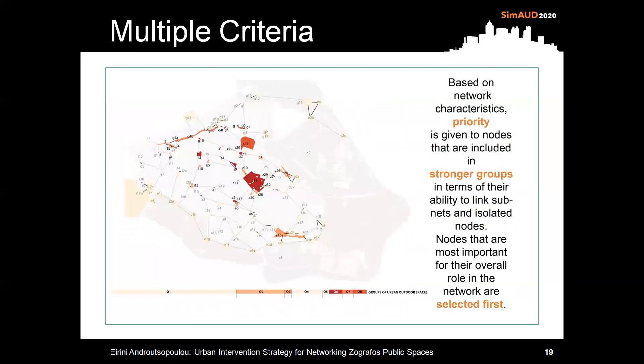In order to set up a network of public spaces, priority is given to nodes that are included in stronger groups in terms of their ability to link subnets and isolated nodes. Therefore, the nodes that are most important for their overall role in the network are selected first.